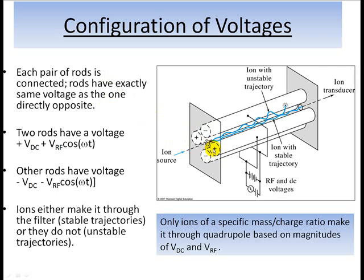The exact same thing is happening to the voltage of the rod directly across from it. Two rods have a voltage. Let's say the DC voltage is positive, and added to that is this alternating voltage. For the other rods, it's a negative DC voltage.